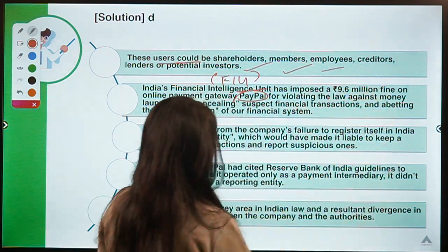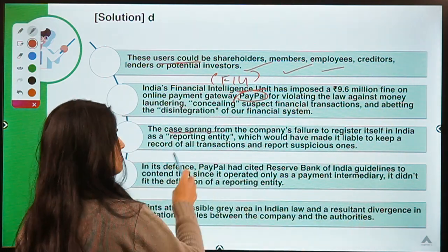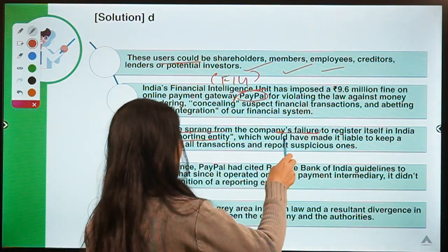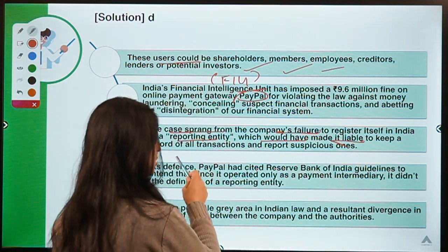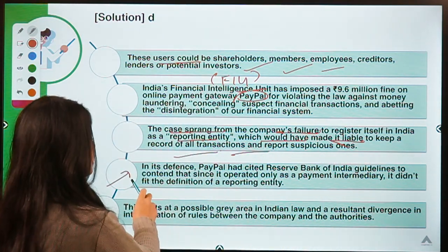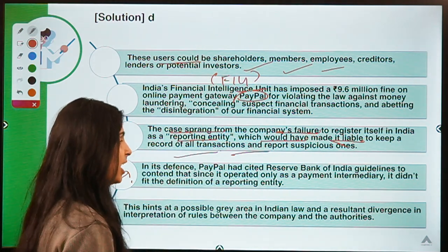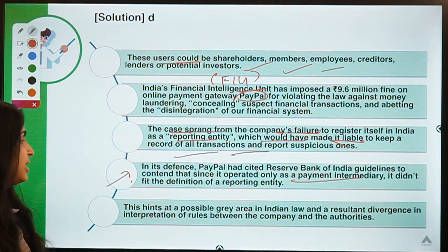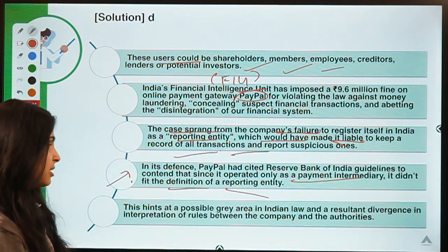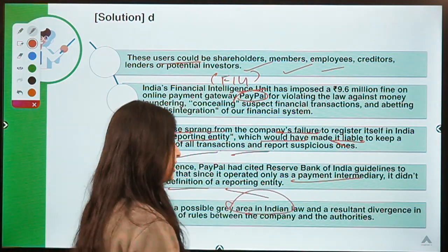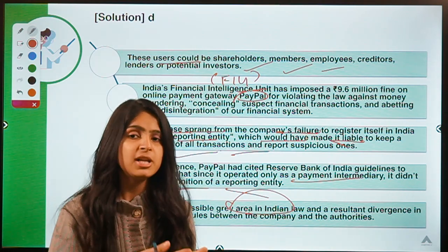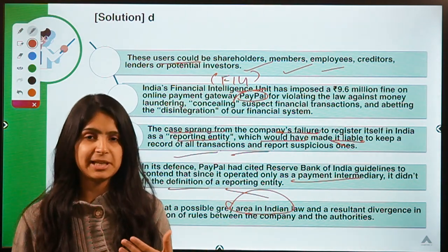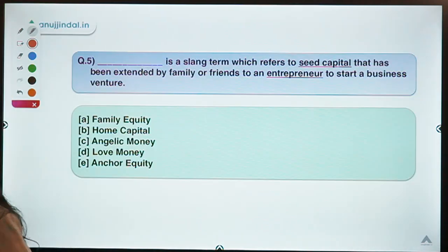The case came out from PayPal's failure to register itself in India as a reporting entity, because it is supposed to do so — and if it did, it would have to disclose its financial transactions. PayPal said it does not qualify to register as a reporting entity because it is just operating as a payment intermediary and did not fit into the definition. This brings out a gray area in Indian law that policy makers need to work upon — whether to make amendments in the criteria defined for reporting entities.